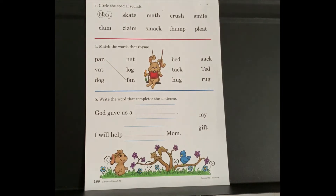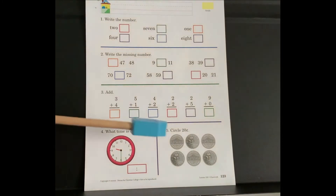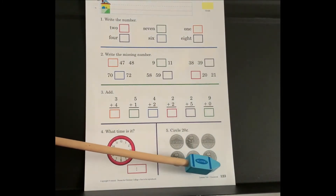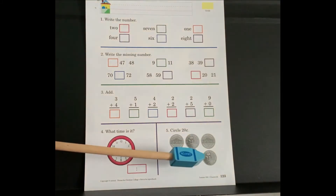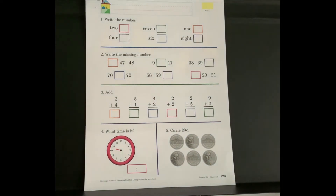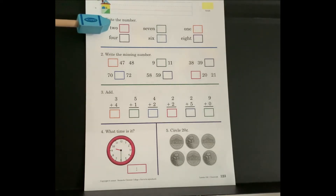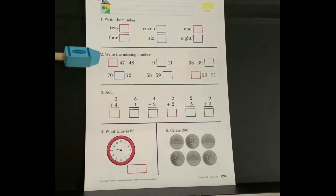We are still on lesson 150, now on page 123 of your math paper. Write your name. Number one, write the number. The number word is there for you to read, and you are going to write the number in the box provided. When you have completed number one, you are going to number two.